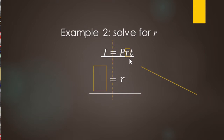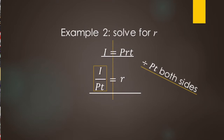R is being multiplied by P and T. So to undo multiplying by P and T, we divide by PT on both sides. Our left-hand side becomes I divided by PT. PT doesn't divide evenly, so we just leave it as a fraction. Then PT divided by PT leaves just R on the right-hand side.